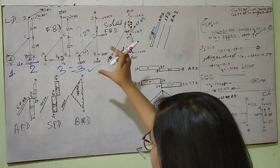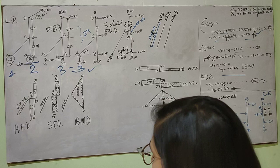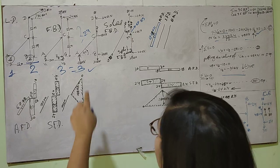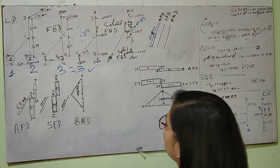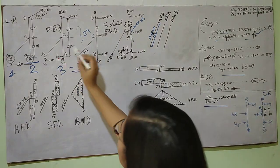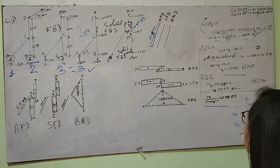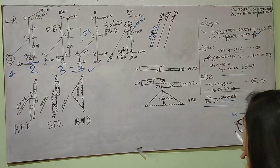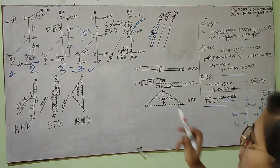Now I need to find the force in member AC. I already got reaction VA equals 48 kilonewtons. If I divide this 48 by sin 45 degrees, I'll get 67.88 kilonewtons. So this member has a force of 67.88 kilonewtons.